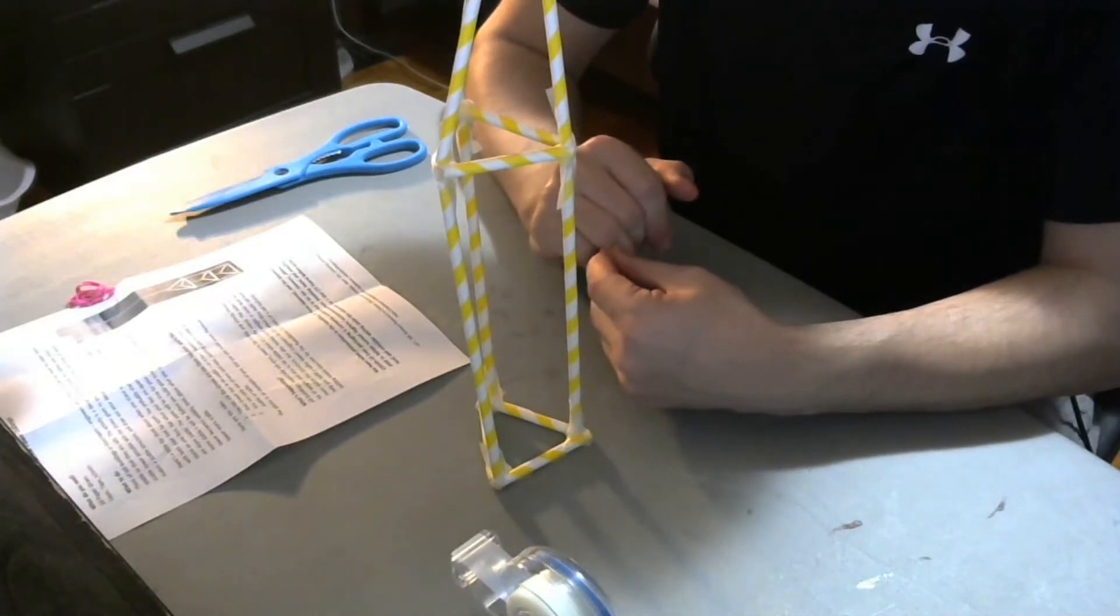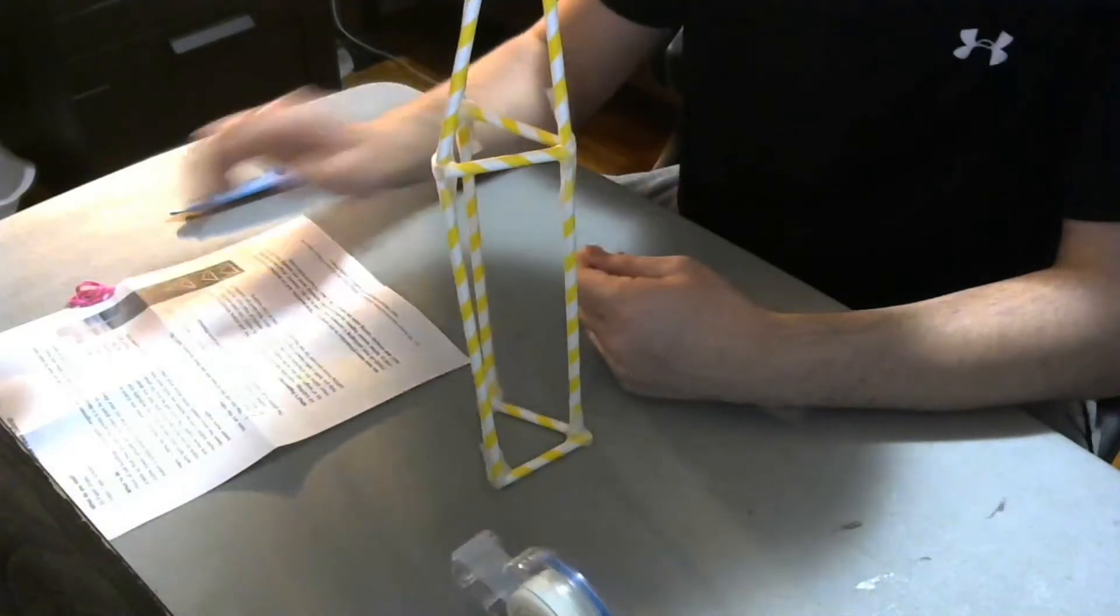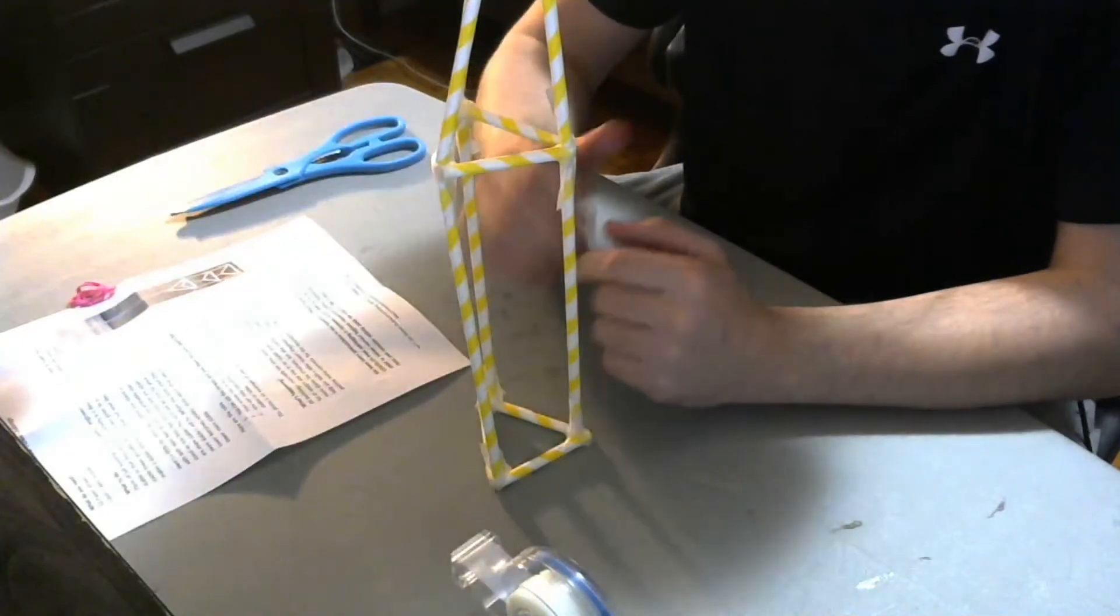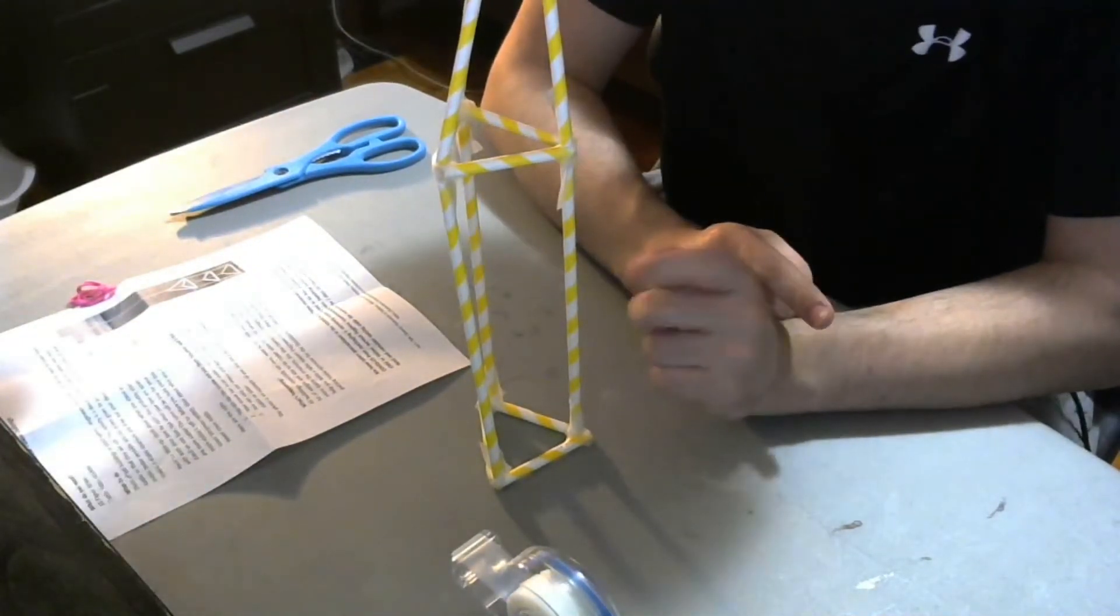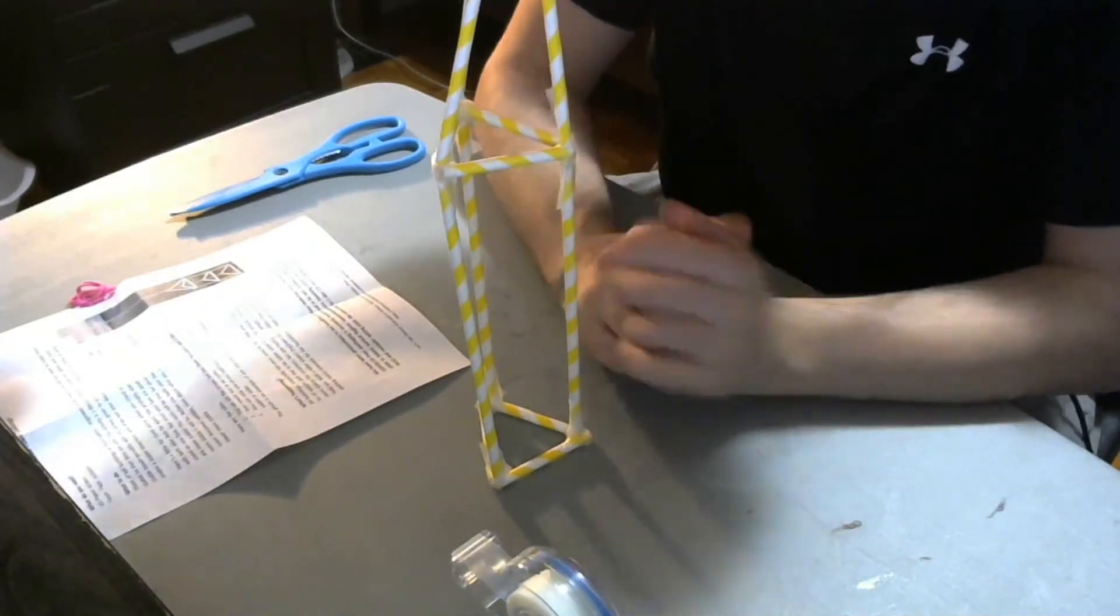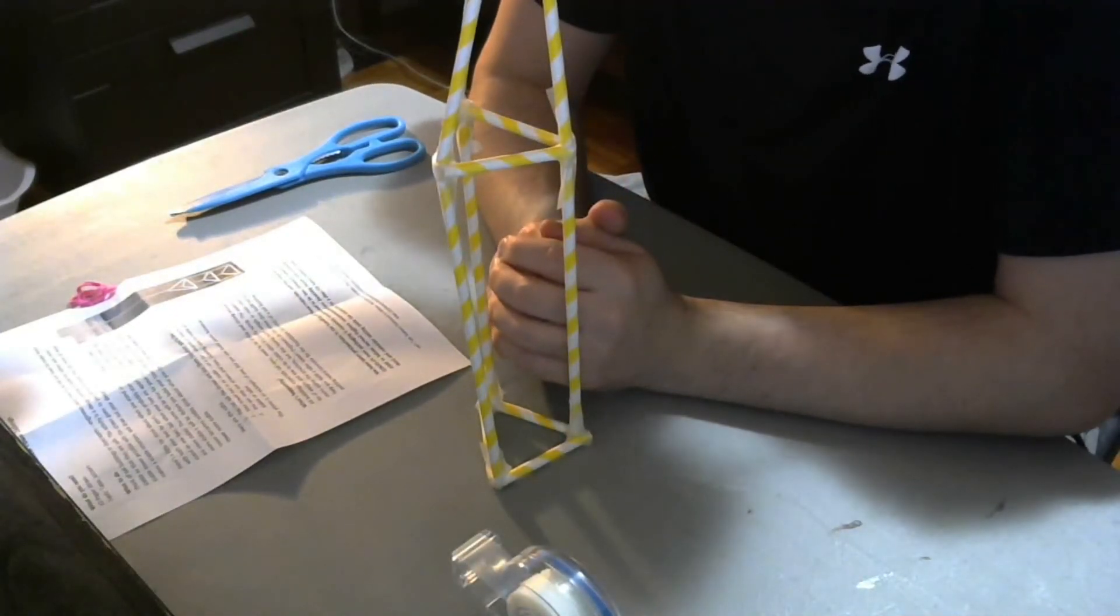And you know, try and make it as complex or as interesting as possible. On the little sheet here, it gives you a little example. Mine follows the same kind of parameters. Triangles are your best friend when it comes to making things. They're very strong. And honestly, that's it.